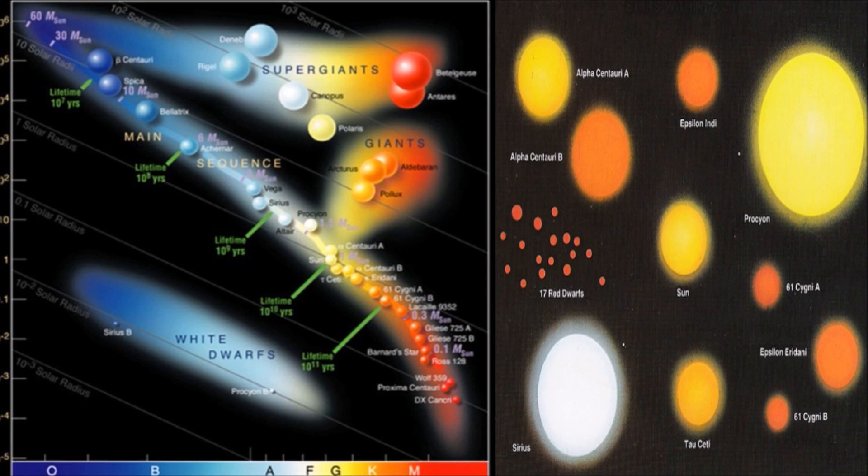Also Sirius, which is the second closest star to us, there is also a lot of life, and many of us has been living both on Alpha Centauri and Sirius in past lives.